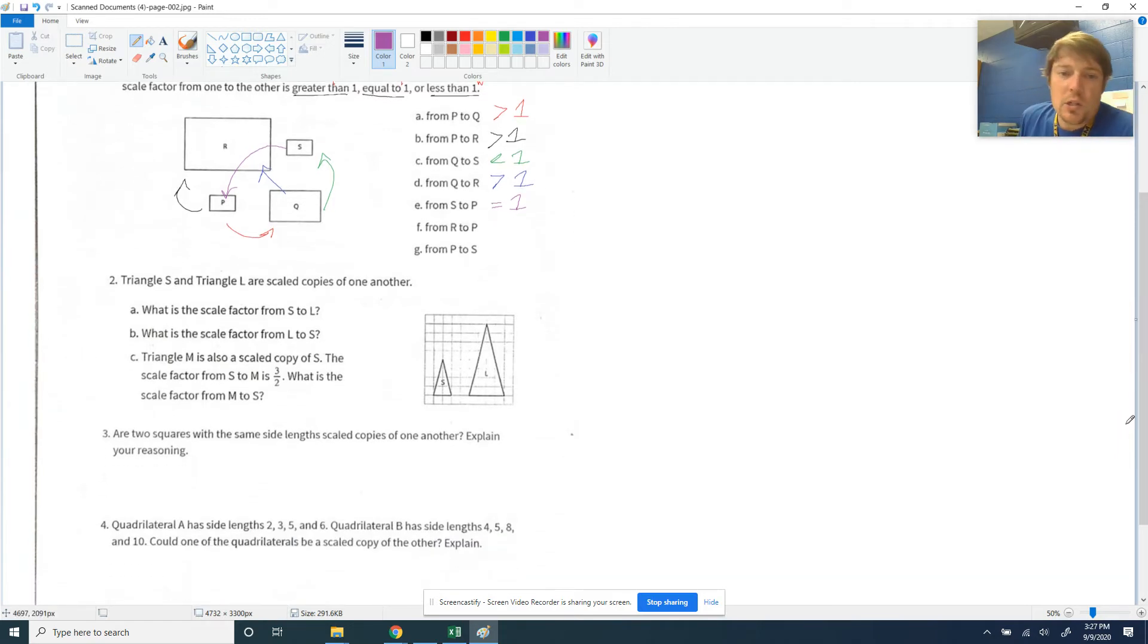Number two, triangle S and triangle L are on grid there, and they are scaled copies of one another. Our job is to, part A, find the scale factor from S to L. So going from here to here. Let's do some counting. This is 2 blocks wide, and this is 1, 2, 3, 4 blocks wide. So that means that they are multiplying the side lengths by 2 to get there. Therefore, our scale factor is 2.